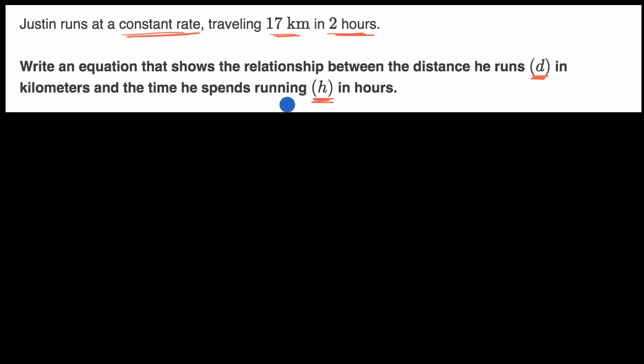All right, now there's several ways to approach this question. One way is to say, look, he's running at a constant rate. So his distance is going to be equal to some constant, let's just call that lowercase k, times the amount of time he spends running.